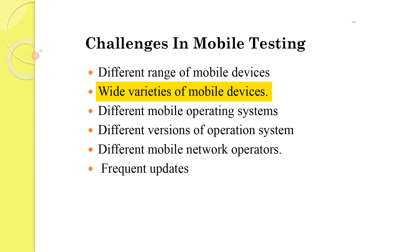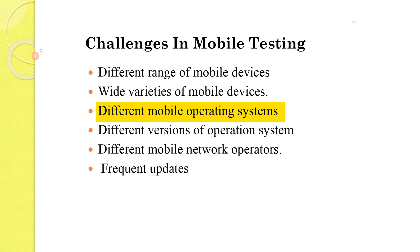Different ranges mean different types and varieties in terms of build and versions. We have to check on different versions of the same brand and then different brands available. Then there are different mobile operating systems — we have Android phones, Windows phones, and iOS phones — and each different operating system needs to be tested separately.